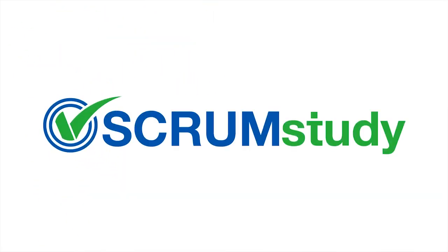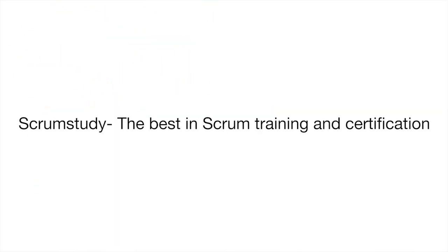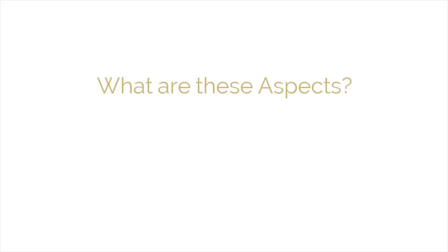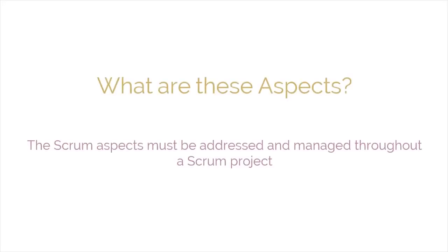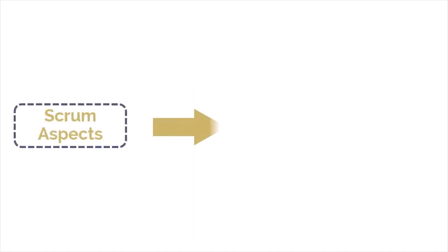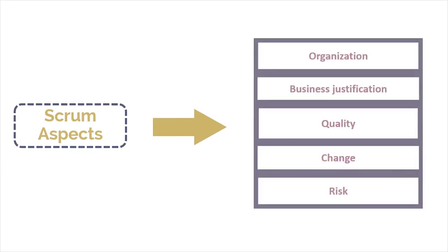Hello, and welcome to the new module Scrum Aspects under the framework of SBOTGuide. Previously, we saw the key principles of Scrum in detail. This module will introduce you to the various aspects of Scrum, which must all be addressed and managed through a Scrum project. The five Scrum aspects that we will discuss in this module are organization, business justification, quality, change, and risk. In the SBOTGuide, all five Scrum aspects are presented in chapters 3 through 7.